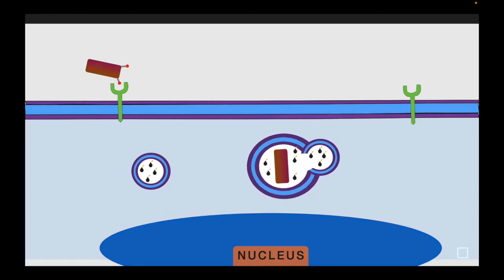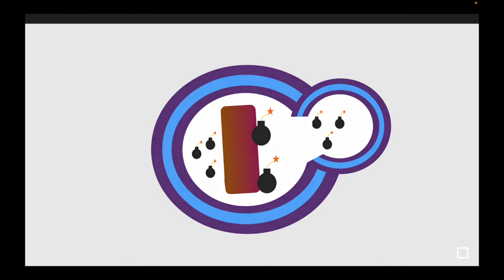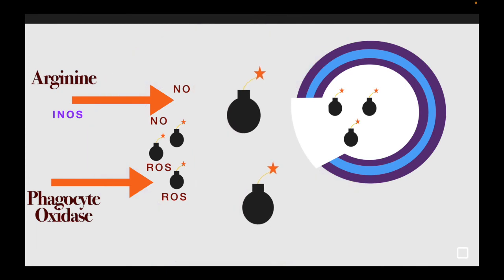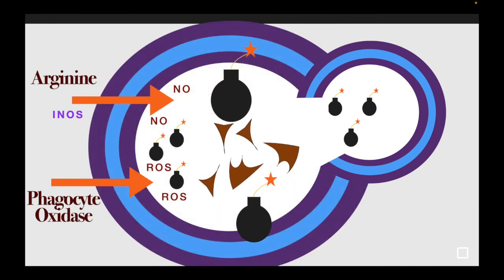Once a phagolysosome is formed, two mechanisms are used: lysosomal enzymes to destroy the organism, or the formation of reactive oxygen or reactive nitrogen species. By these enzymes, superoxide ions or nitrous oxide are formed, causing oxidation and damage to the microbial cell wall — resulting in destruction of the microorganism. This is mainly driven by the respiratory burst. The action of reactive oxygen species is to destroy infective microorganisms, and the same process is also seen in wound healing.